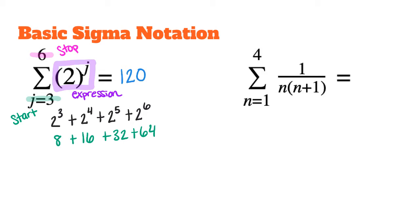Let's take a look at the next example on the right. Here I am going to use the variable n in my expression. I start by plugging in 1, because that is what it says to start with, and then 4 is where I am going to stop. I have a fraction as my argument — that is the expression I am going to work with to calculate the sum. So I plug in 1 and stop when I get to 4.